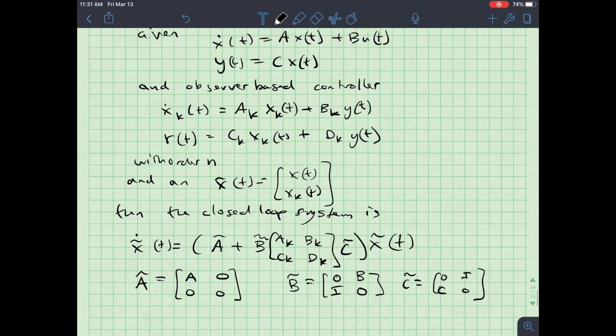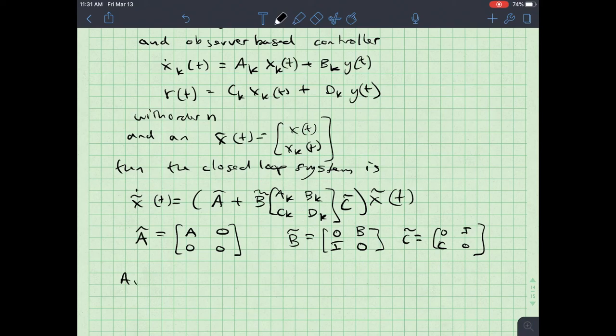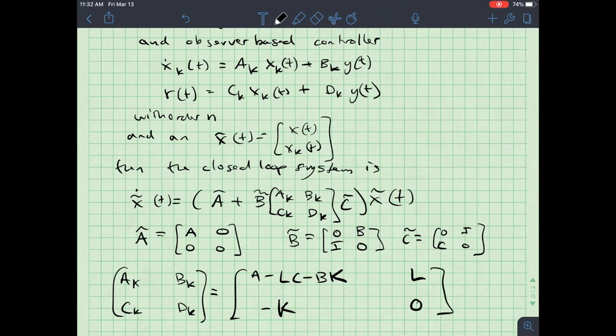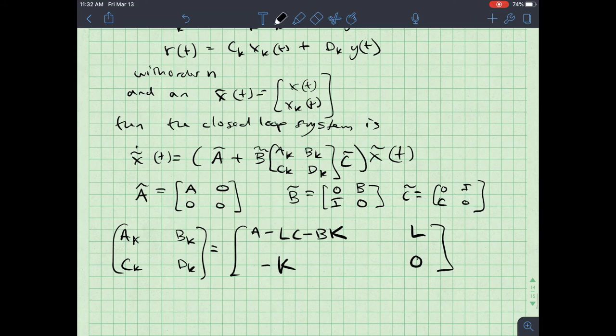Now, what I'm going to do is clarify what a sub k and b sub k are, as well as c sub k and d sub k. If that's not clear, what I'm saying verbally, I'm saying d sub k, not d sub k, although that will make an interesting video title. A minus l, c minus b times k, not b sub k. That's a sub k. L is going to be b sub k, and then minus k is going to be c sub k, and d sub k is just going to be a zero value there. Matrix, depending on the dimensions of k and l.